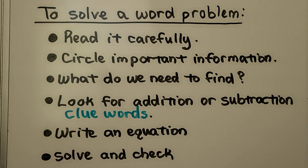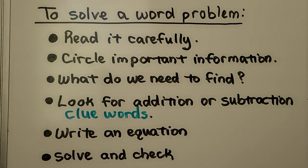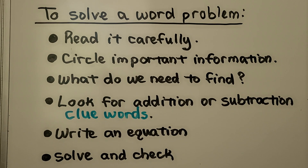To solve a word problem, we read it carefully and circle important information. We figure out what we need to find — what is it asking of us. We look for addition or subtraction clue words. We write an equation, and we solve it and check our answer.